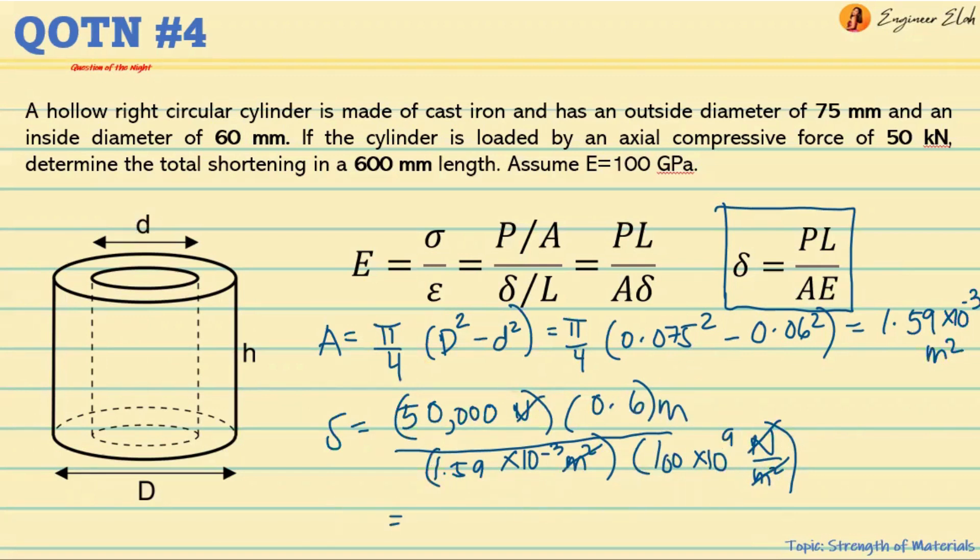The answer we get is 1.89 times 10 raised to negative 4 meters, but converting this to millimeters, the answer is 0.189 millimeters. So this is the elongation or shortening.